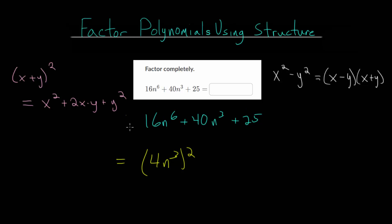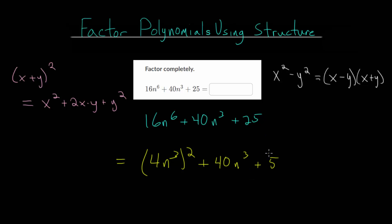We're essentially taking the square root of this. The square root of 16 is 4, and the square root of n to the 6th is n to the 3rd. If you were to re-multiply this out, 4 times 4 is 16, and n to the 3rd times n to the 3rd gives 3 n's multiplied together and then 3 more, a total of 6 n's. Let's also just note that 25 is simply 5 squared.